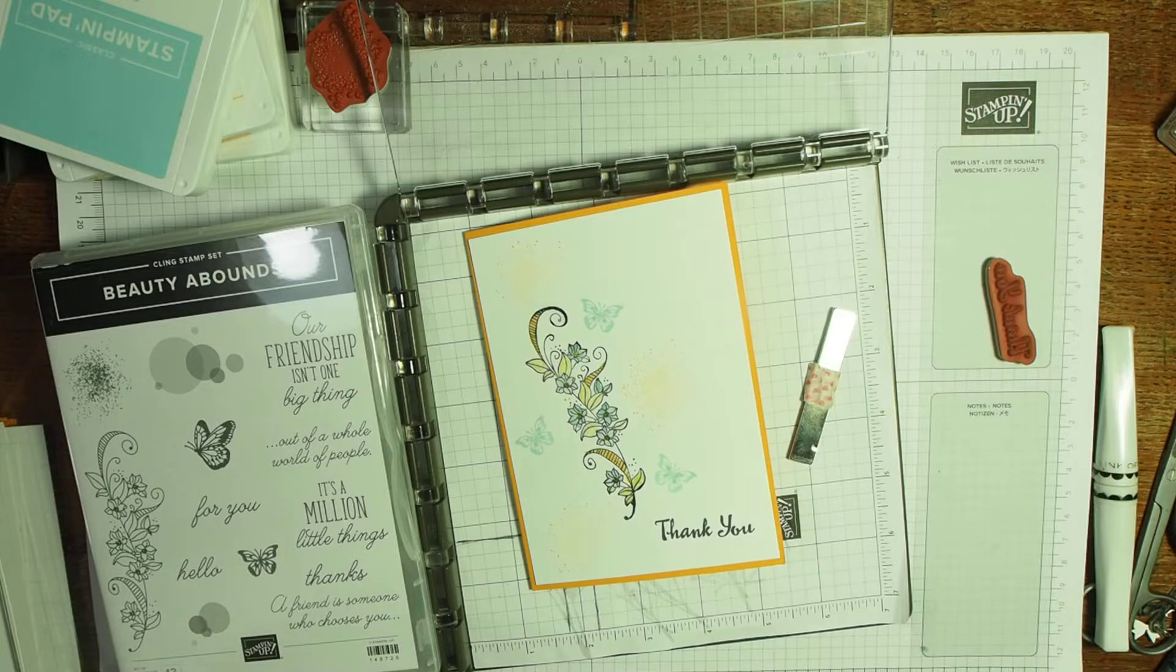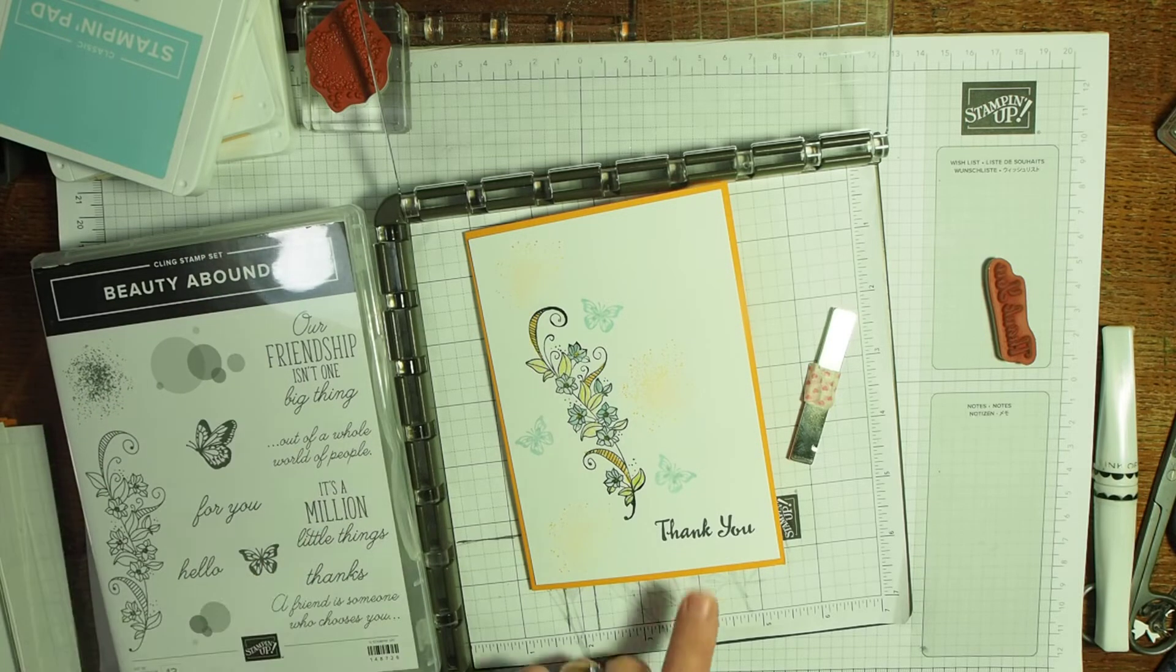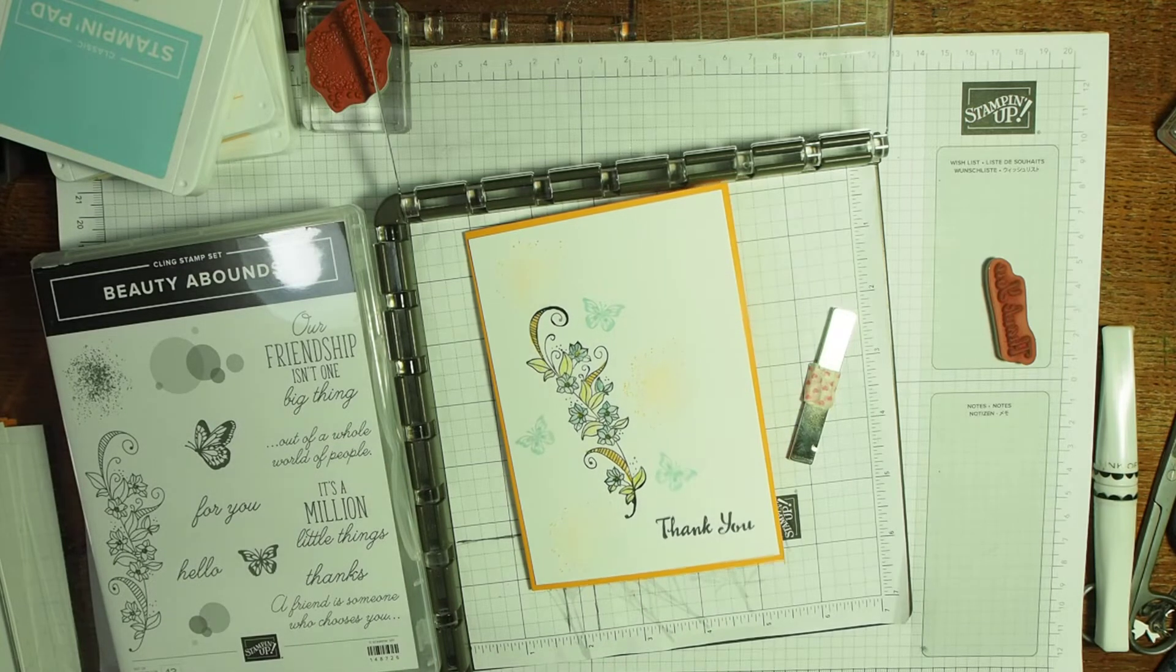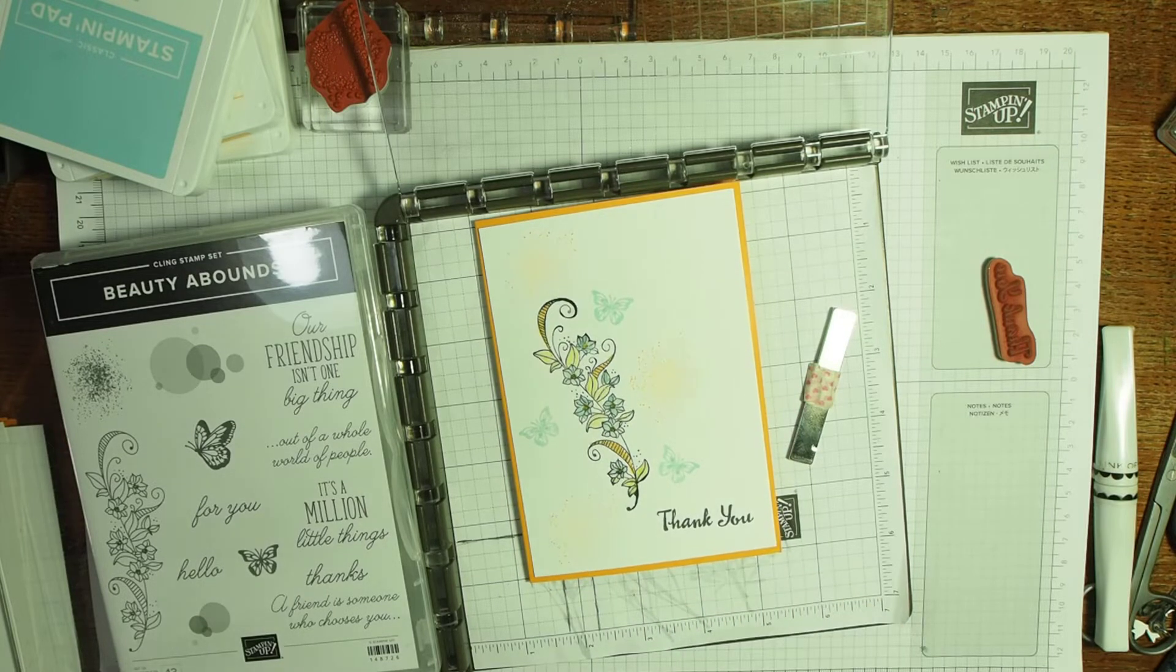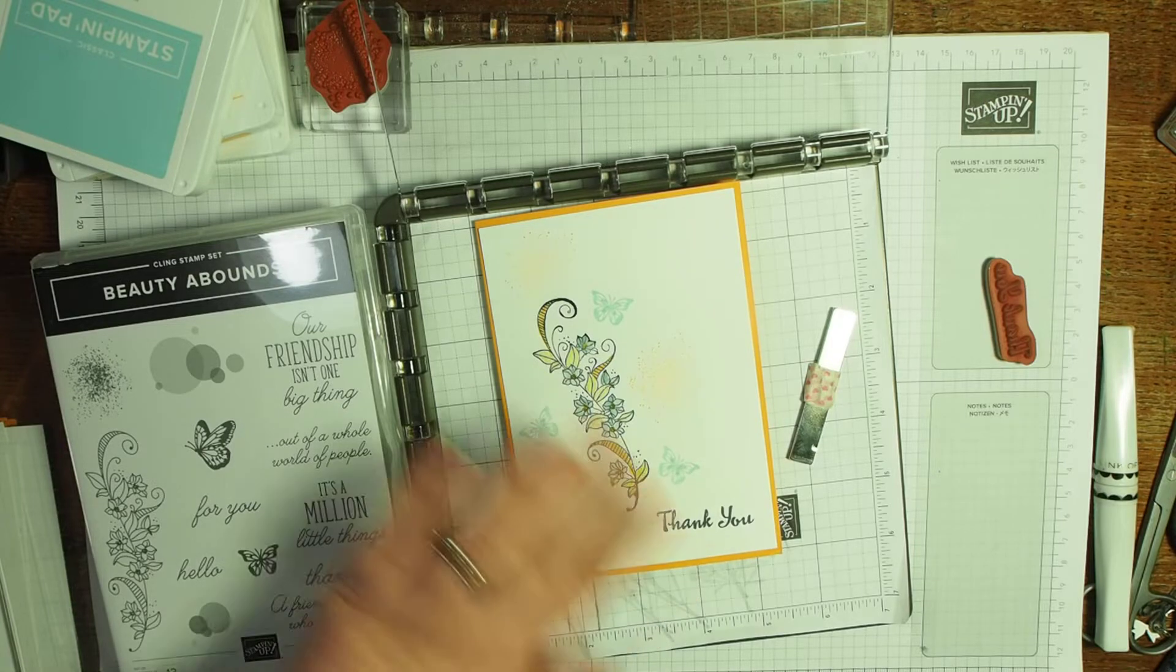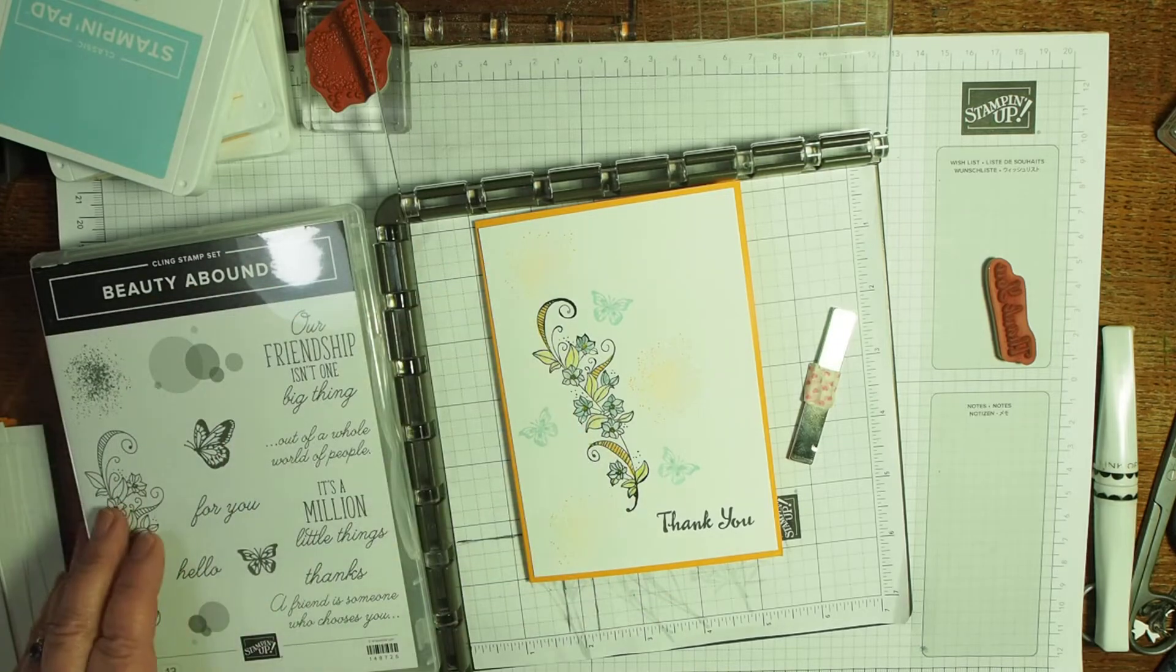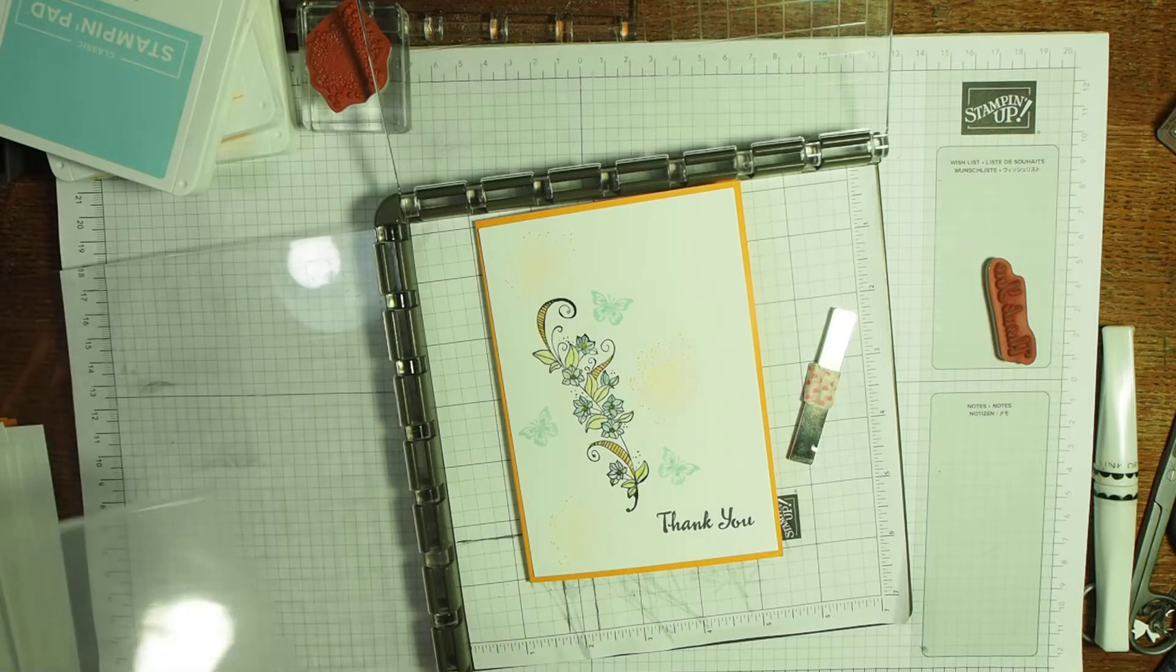I need quite a lot of cards, so the Stamparatus is really good when you want to make a lot of cards that are much the same. For this card I've been using the Beauty Abounds set, and I've taken my thank you from Petal Palette. Petal Palette has this nice thank you with the font that I rather liked, so I'm using this stamp from Beauty Abounds.